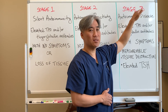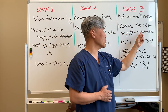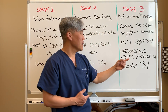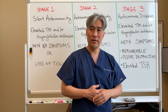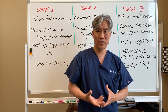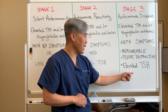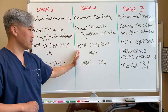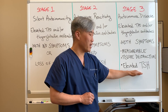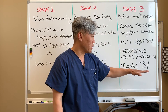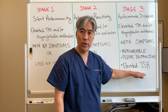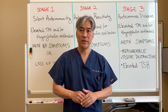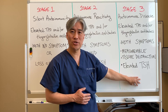Then you have Stage Three — autoimmune disease. In that stage, you have elevation of TPO and/or thyroglobulin antibodies, you have symptoms like hair loss, constipation, weight gain, and you have measurable tissue destruction. Your thyroid is inflamed, tender to touch, destruction is happening to the thyroid gland, and TSH is elevated. This is when the conventional medical model will intervene — they'll say the TSH is elevated and you need thyroid hormones to bring it down. By this time, tissue destruction is already occurring.